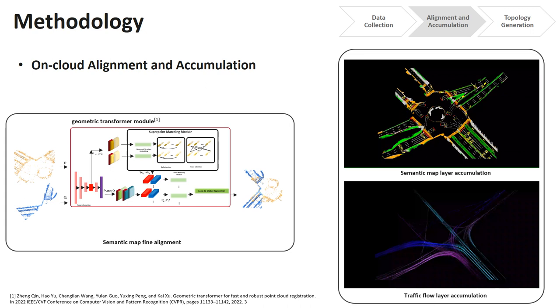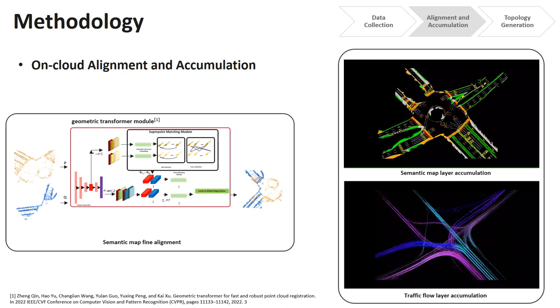Firstly, we determine the coverage of the intersection. Secondly, the traffic flow is divided into groups according to the same start and end points.